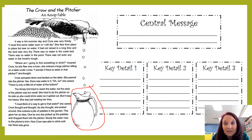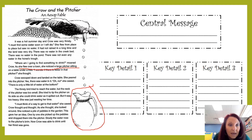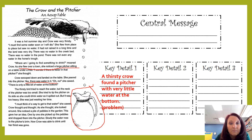Let's look at the key details that can help us figure out the central message. We need to find the problem of the story. We noticed that crow looked all over to find something to drink, and finally she found water in a pitcher. We can underline in the text where we found that — she noticed a large pitcher sitting on a table, and yes, there was water in it. So we're going to add: a thirsty crow found a pitcher with very little water at the bottom. Now we know crow found water — however, how is she going to get it since she can't reach it?